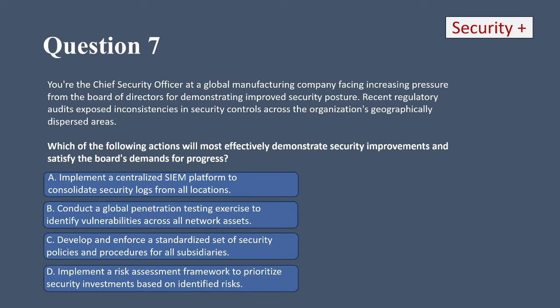Question 18. You're the security administrator for a government agency responsible for handling highly classified information. Recent audits revealed inconsistencies in how different departments classify and protect sensitive data. Management wants to standardize data classification procedures to ensure consistent and appropriate security measures. Which of the following classification levels should be your top priority for implementing stricter controls and access restrictions? A, public information that can be freely shared; B, sensitive but unclassified data requiring limited access controls; C, confidential information requiring restricted access and protection measures; or D, top secret information with the highest level of classification and strictest access controls.